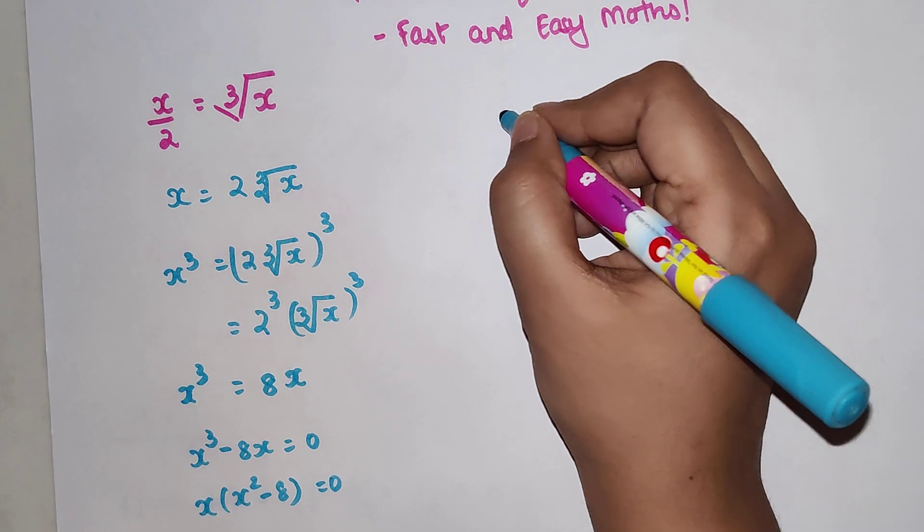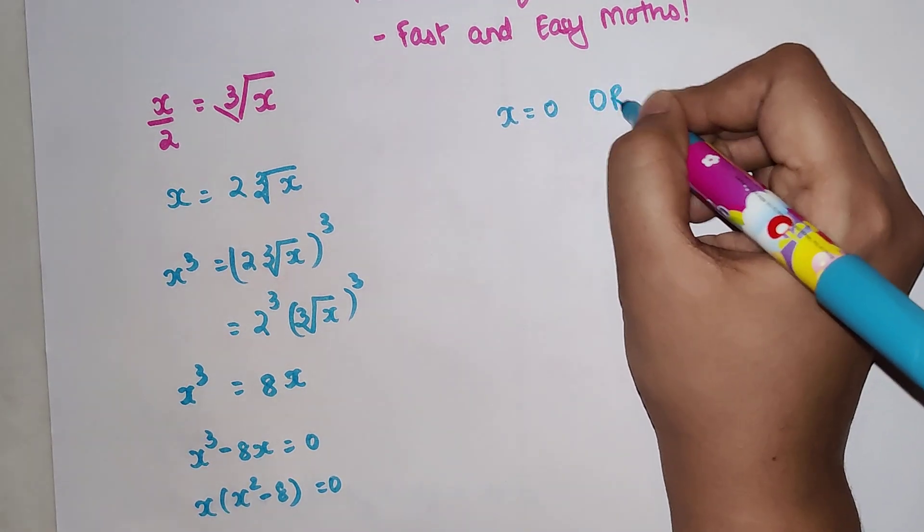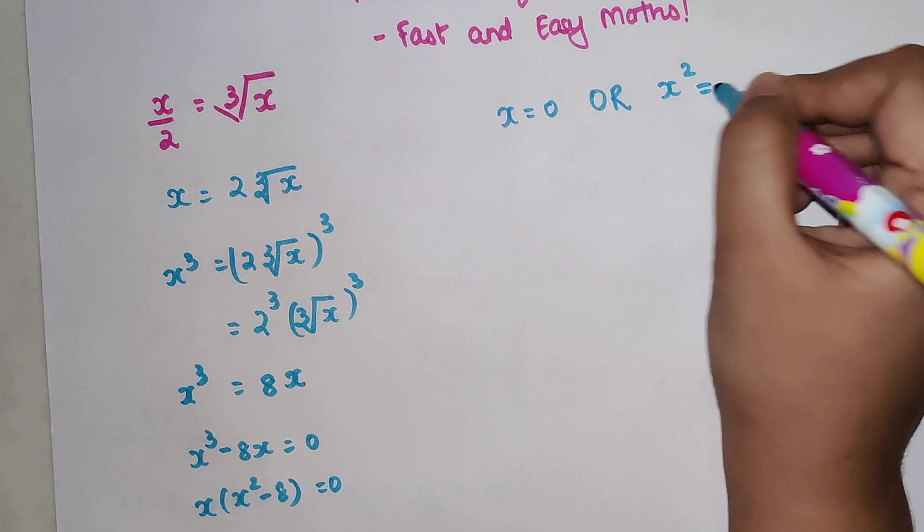So now your final answer can have x equals 0 or x squared equals 8.